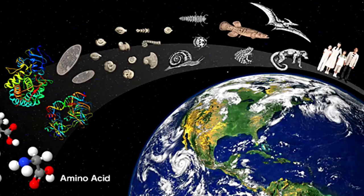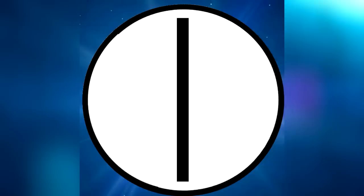The details of the origin of life are unknown, but the basic principles have been established. There are basically two schools of thought, which are further divided into many, about the origin of life. One suggests that the organic components arrived on Earth from space, while the other argues that they originated on Earth. Here are five theories of where life on Earth originally came from.